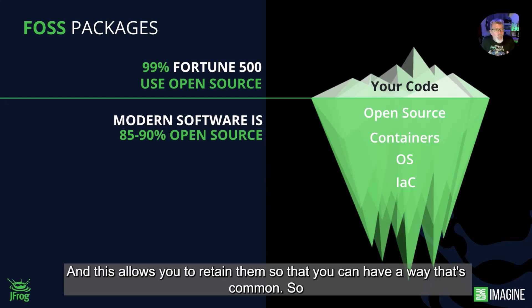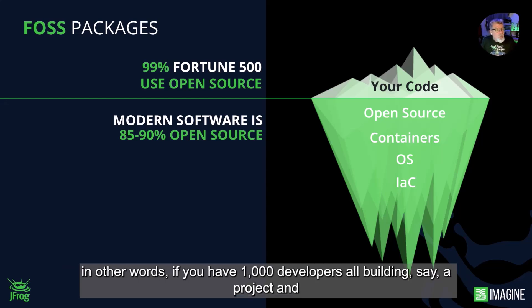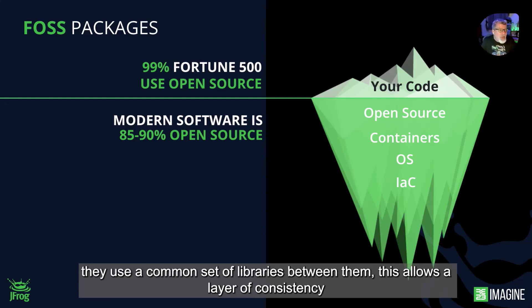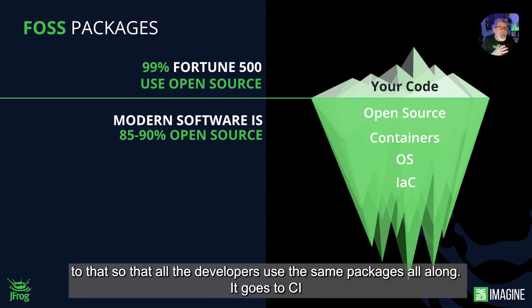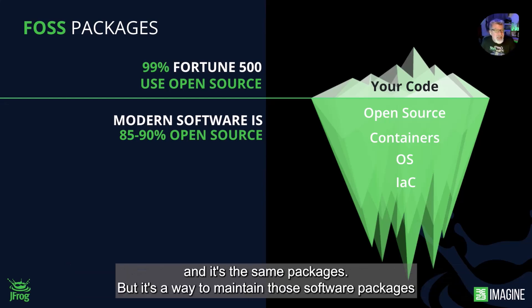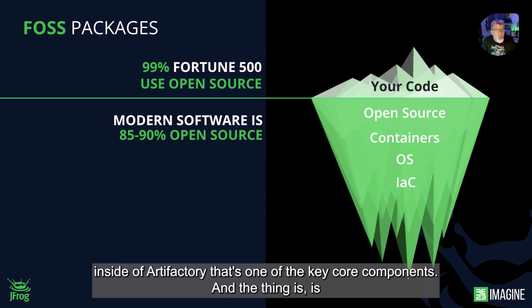If you have a thousand developers all building a project and they use a common set of libraries, Artifactory provides a layer of consistency so all developers use the same packages throughout development. When it goes to CI tools, it's the same packages — it's a way to maintain those software packages inside of Artifactory. That's one of the key core components.